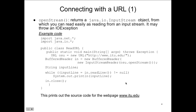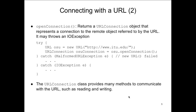We'll do it with ITU.edu and see what prints to the screen — it's like the option in a web browser to view source, because you're going to see the source instead of the HTML output. A web browser reads it in, takes it, and translates it to HTML. We also have an openConnection method we can run on the URL, which returns a URLConnection object representing the connection to the remote object referred to by the URL. It throws an IO exception as well.